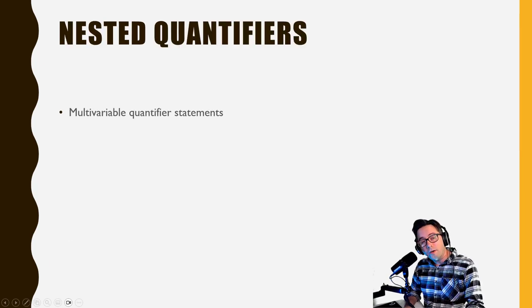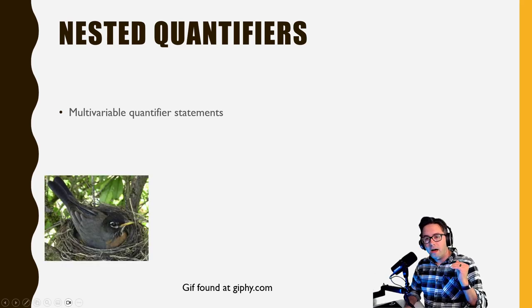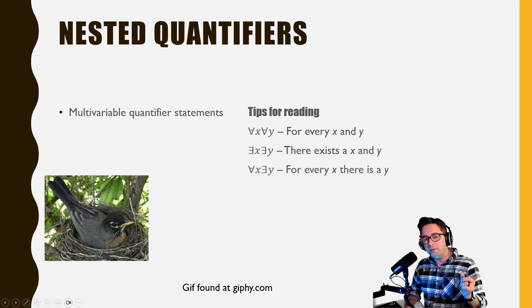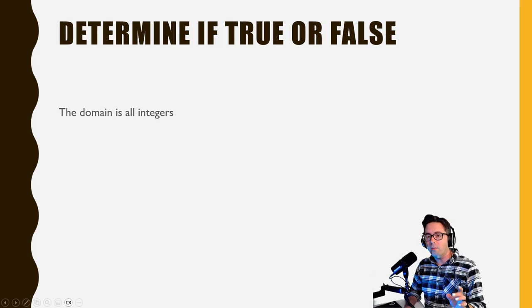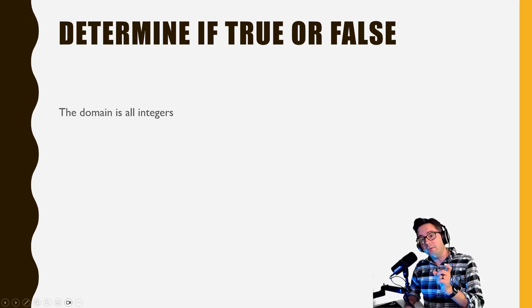Hopefully you're comfortable with quantifiers, because now we're going to take it up a notch to nested quantifiers — having multiple ones. For reading multiple quantified statements: 'for every x and for every y,' 'there exists an x and a y,' or 'for every x, there is a y,' versus 'there is a y for every x.' Those last two sound very similar but they're not the same thing. Let me give you an example using the predicate x plus y equals zero.